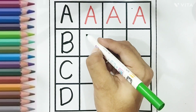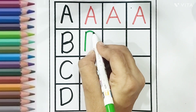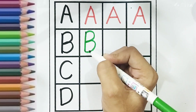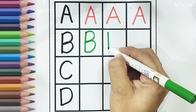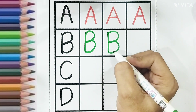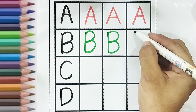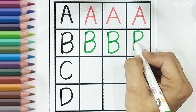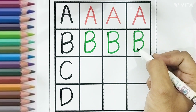Green color. B, B for bus. B, B for balloon. B, B for banana.